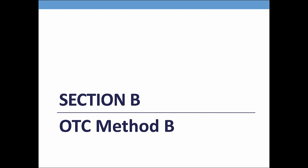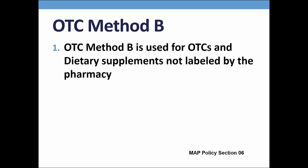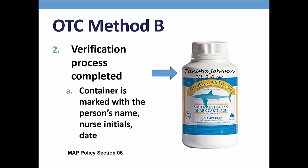The next section is Section B: over-the-counter method B. Some agencies do not utilize over-the-counter method B, meaning all over-the-counter medications and dietary supplements are labeled by the pharmacist. However, if your agency does utilize over-the-counter method B, you will want to be sure that all requirements on this topic are met. Over-the-counter meds not labeled by a pharmacist must be verified by a licensed professional, typically the nurse, ensuring that the product purchased is what the HCP ordered. Documentation of the verification is completed by the nurse, writing the individual's name directly on the unopened container of medication in addition to the date and initials.